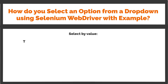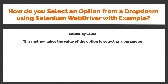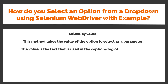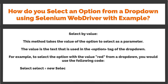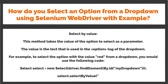Select by Value: This method takes the value of the option to select as a parameter. The value is the text used in the option tag of the drop-down. For example, to select the option with the value 'Red' from a drop-down, you would use: Select select = new Select(driver.findElement(By.id("myDropdown"))); select.selectByValue("Red");